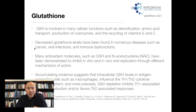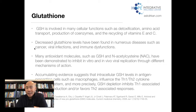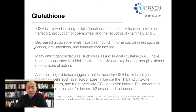In an article published in the journal Current Medical Chemistry in 2006, it states that glutathione — chemical name GSH — is involved in many cellular functions such as detox, amino acid transport, production of coenzymes, and recycling of vitamin E and vitamin C. Decreased glutathione levels have been found in numerous diseases such as cancer, viral infections, and immune dysfunctions like autoimmune disease. Many antioxidant molecules such as glutathione and N-acetylcysteine have been demonstrated to inhibit viral replication in vitro and in vivo through different mechanisms of action.